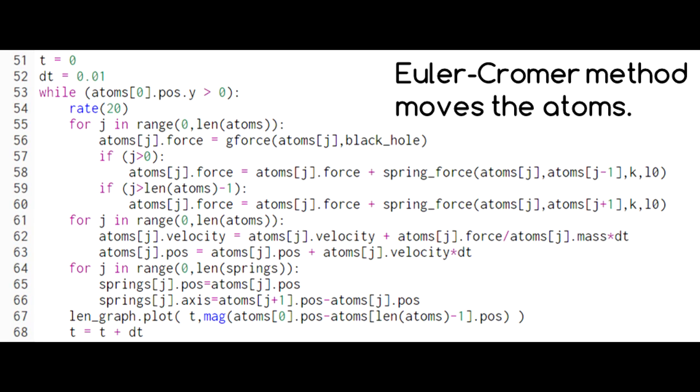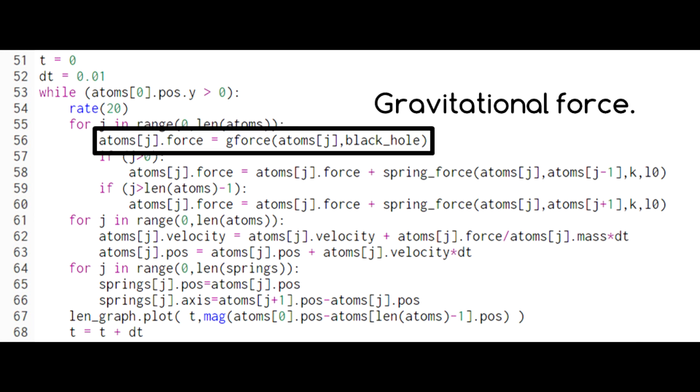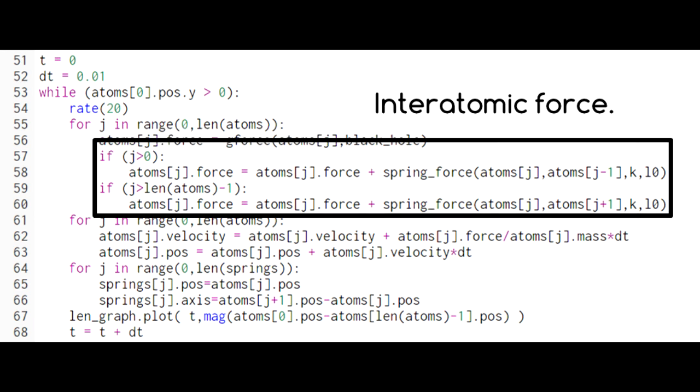Here we simulate the motion of our atoms using the Euler-Cromer method. Again, each atom feels the gravitational force from the black hole and a spring force from each of its neighbors.